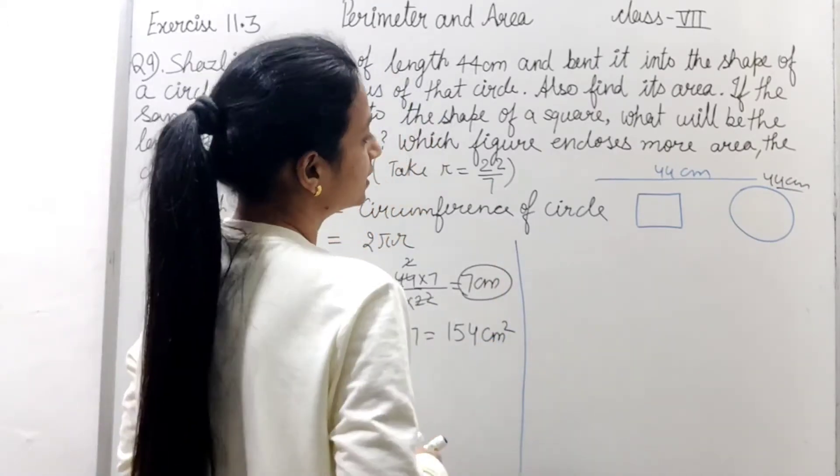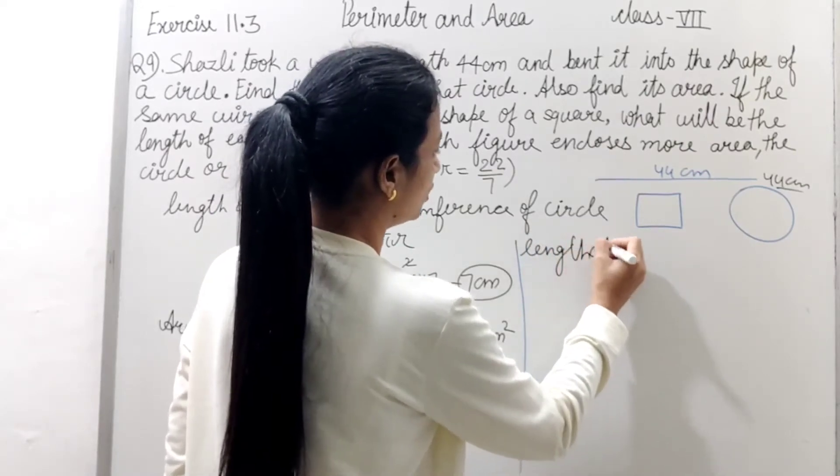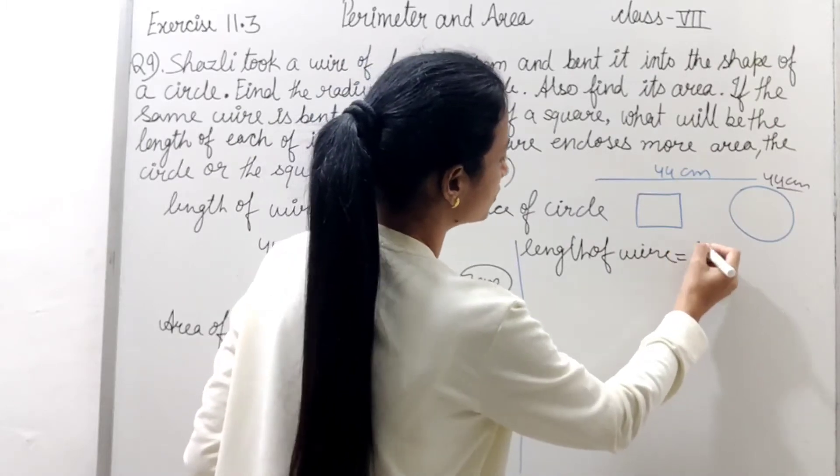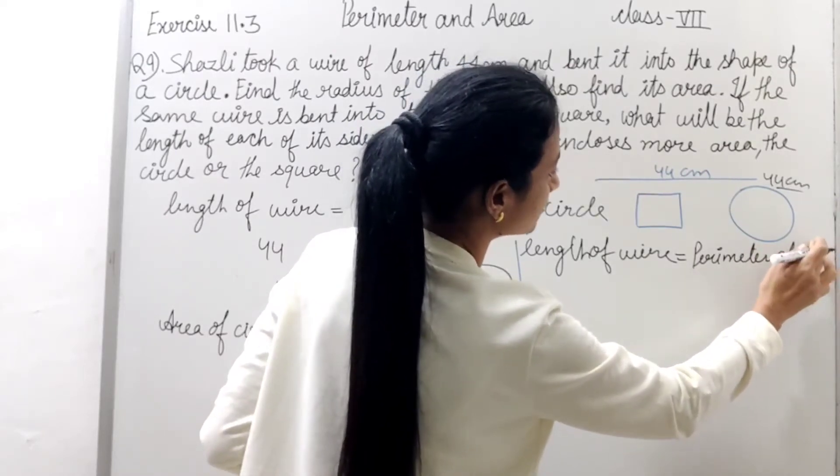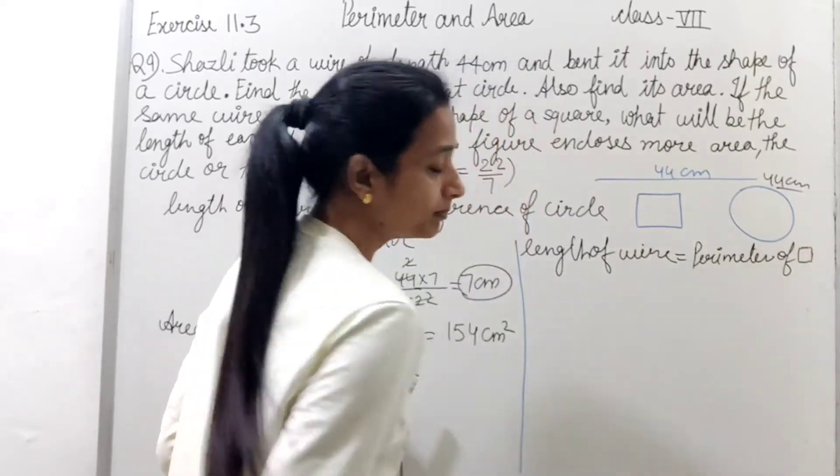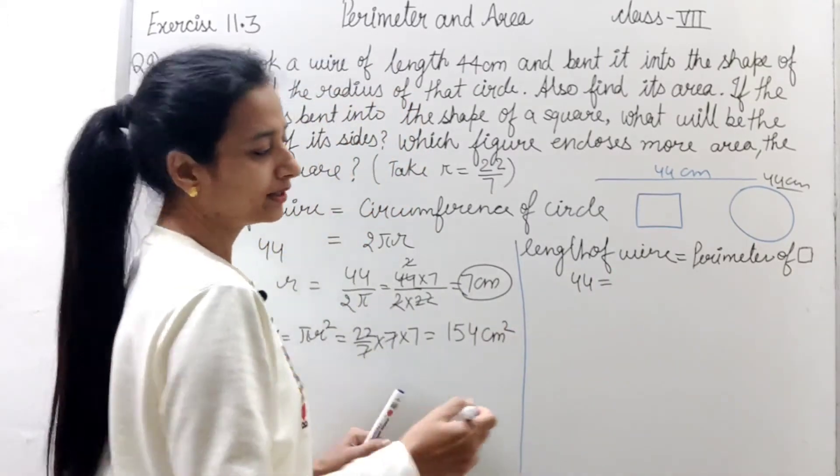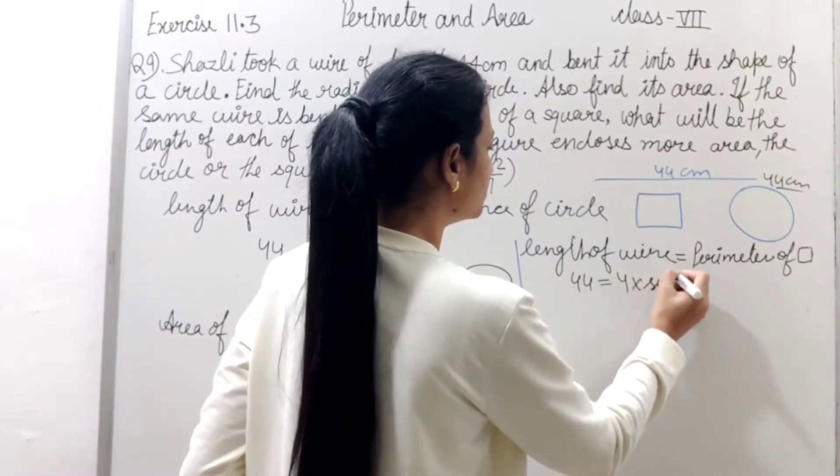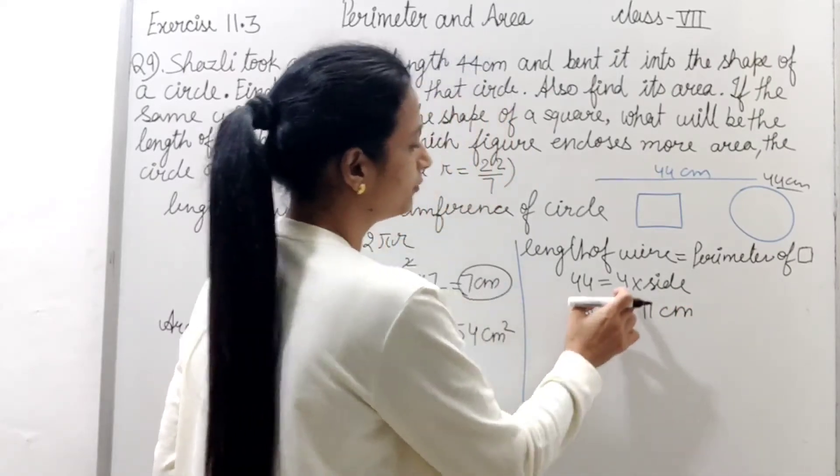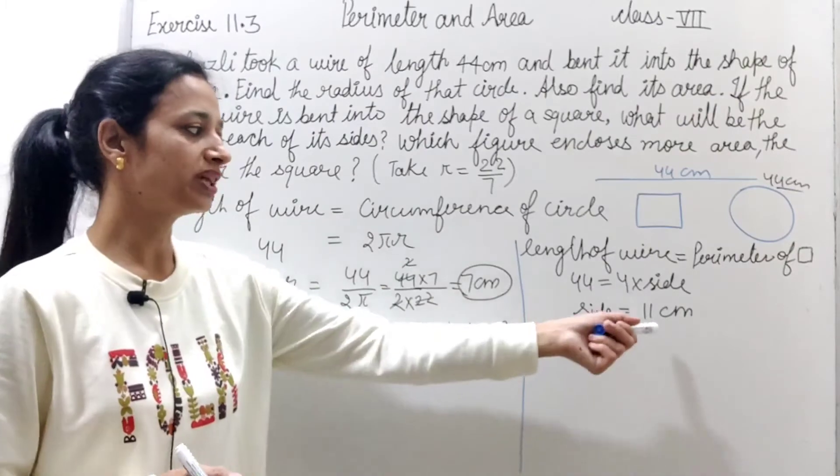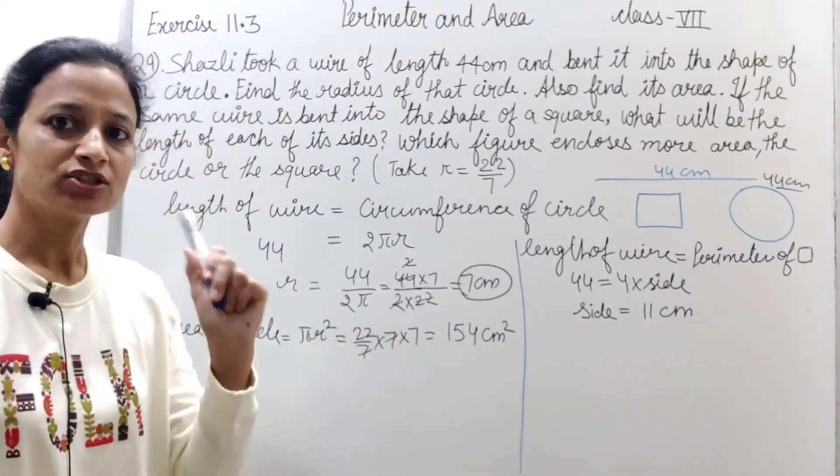To nikaal sakte hai. Ab jab hume pata hai. Length of wire equals to perimeter of square. Perimeter of square ho gaya. To length kitni hai? 44. Aur square ka perimeter kya hota hai? 4 into side. To yahan se side mil jayegi hume? Kitni aa gayi? 11 cm. 4 se 44 ko cancel kar diya. To kitni aa gayi side? 11. To yahan tak bhi ho gaya ki iski side kitni mil gayi hume? 11 cm kiski square thi.